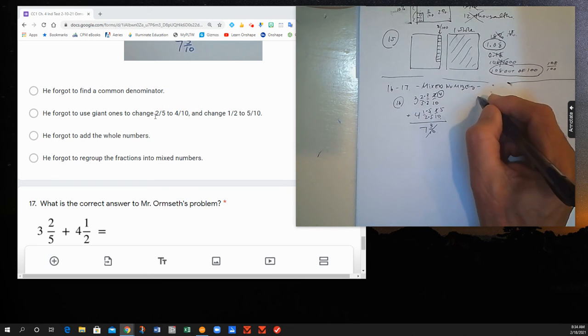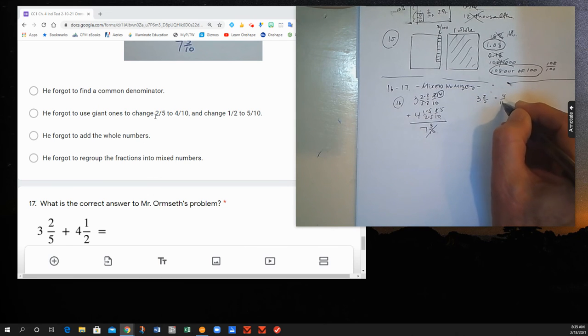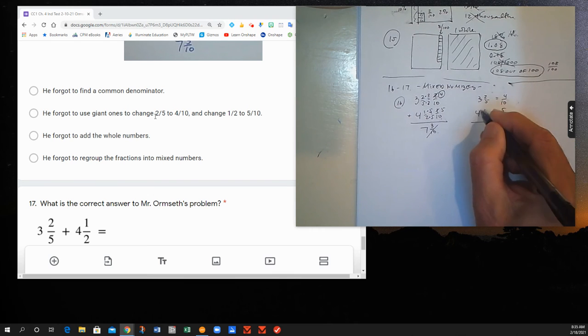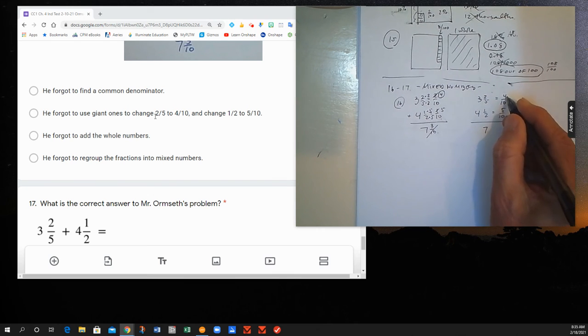And then once we have that fixed up, it's fairly easy to see this is going to become 4 tenths. This is going to become 5 tenths. We add the 3 and the 4 to make 7. 4 tenths and 5 tenths should be 9 tenths.